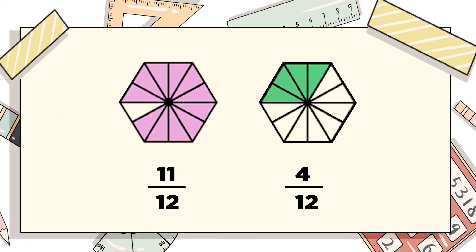Now can we compare these two pictures according to the fractions in front of us? Yes. Because the denominators are both 12. Hence, which one is greater — 11 or 4? Of course 11. Therefore our alligator sign will open towards 11/12 rather than 4/12. Hence 11/12 is greater than 4/12.